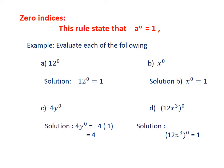Part a: 12^0. Solution: 12^0 = 1. Part b: x^0. Solution: x^0 = 1. Part c: 4y^0. Solution: 4y^0 = 4(1) = 4.